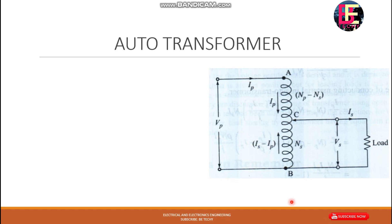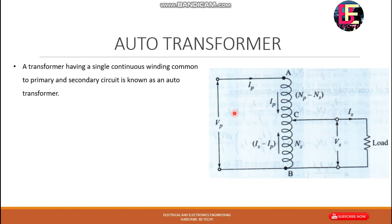Now, looking at the autotransformer. The autotransformer is having a single continuous winding, common to both the primary and secondary circuit. This is different from conventional transformers which have separate primary and secondary windings.